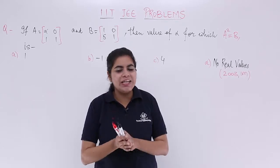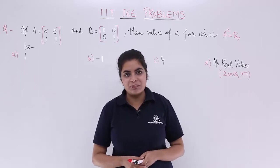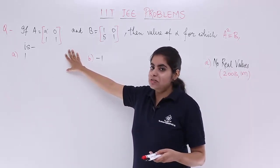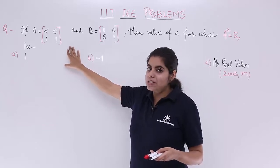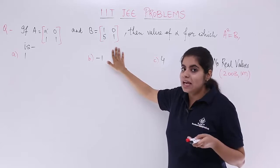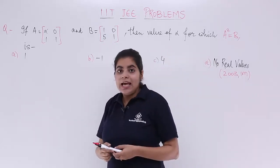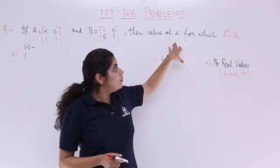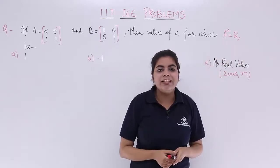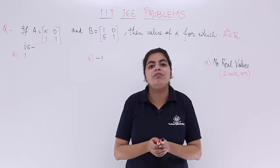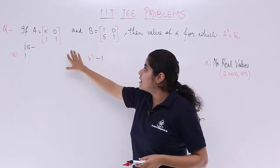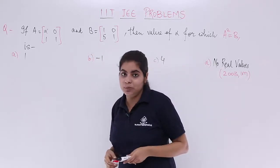Let's see what the question has to say and get started with the solution. The question is: if A is equal to a given matrix with elements alpha 0, 1 1, and B has elements 1 0, 5 1, then what value of alpha will give A² = B? You are supposed to find the value of alpha given this condition.